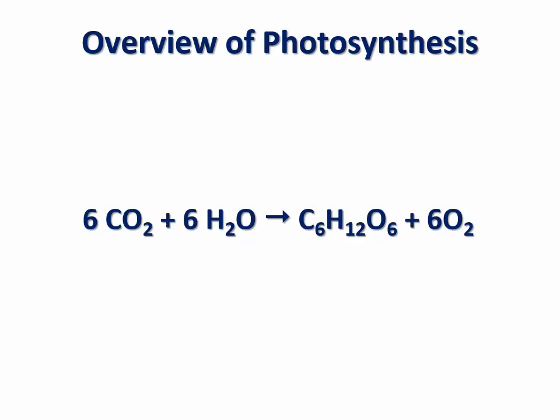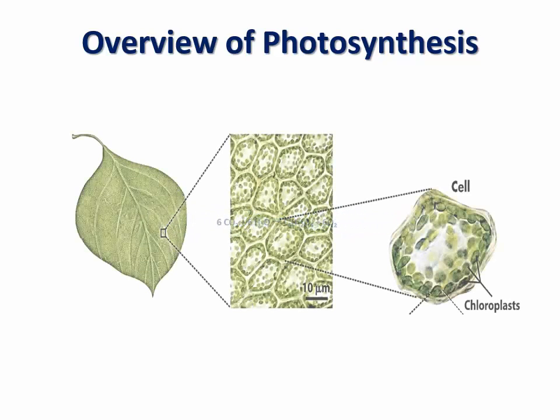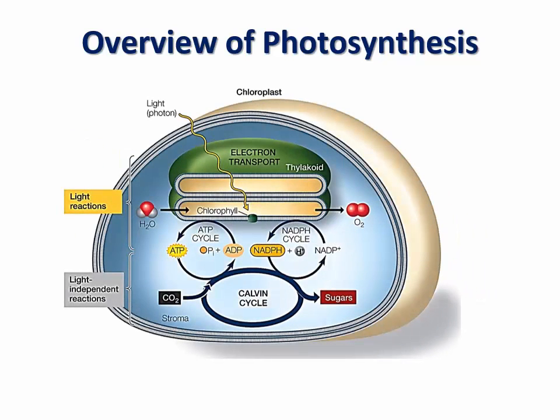As we have seen in the previous video, photosynthesis is a metabolic process by which light energy is captured to reduce carbon dioxide into carbohydrates, and in that process, water is oxidized into molecular oxygen. We also saw that in eukaryotic cells, photosynthesis occurs inside chloroplasts and involves two metabolic pathways: the light-dependent reactions and the light-independent reactions, also known as the Calvin cycle.